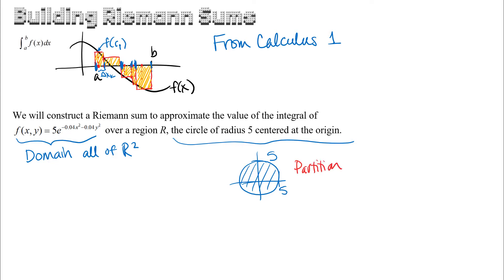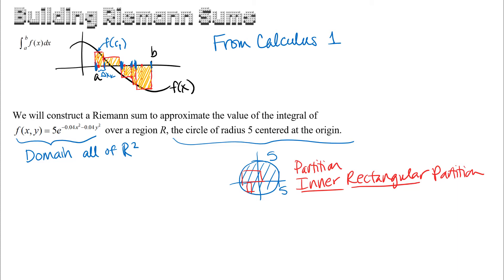We're going to start with what's called an inner rectangular partition, and the idea here is that we want to chop it up into rectangles. We're going to start with rectangular coordinates, so those rectangles should not go outside of our region — we're going to have rectangles inside here, maybe different sizes. On my on-campus classes I have students build this with Legos, and so that's a little harder to do in an online class, but I'm going to go ahead and build that and show you what it looks like.